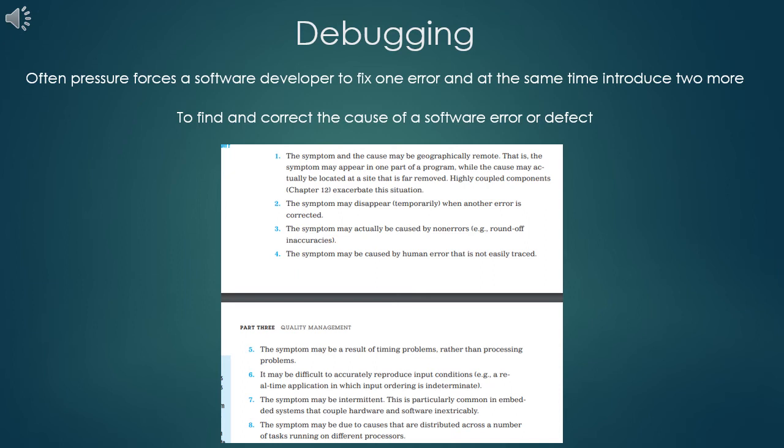In this slide, let us see how errors or misbehaviors — symptoms — can be deceiving. Error occurring at one place might actually be due to a wrong code at an entirely different place. Your textbook lists out several points regarding how errors could be deceiving, and you should be aware of these points. I recommend you to read those points.